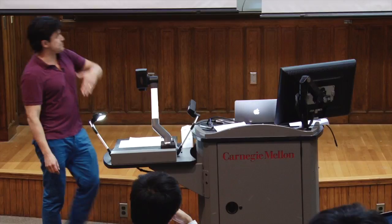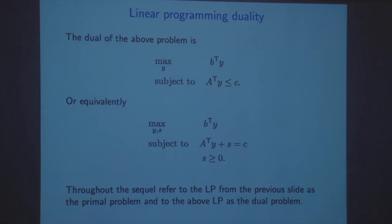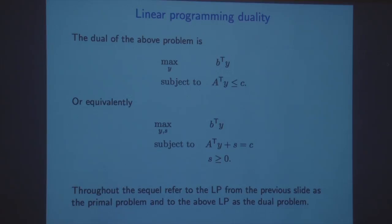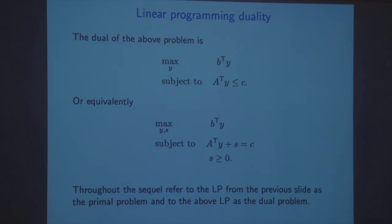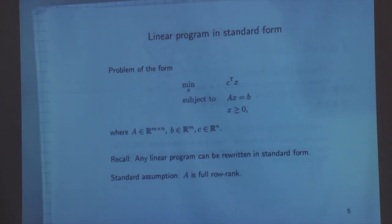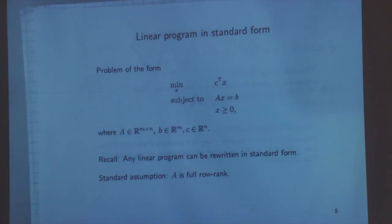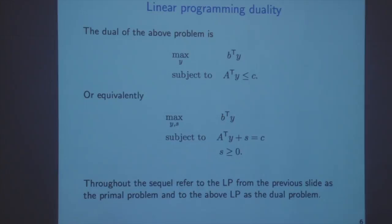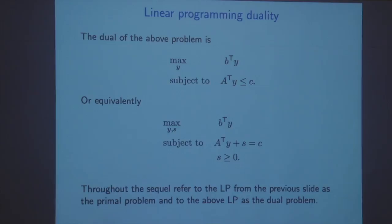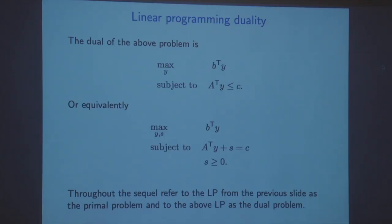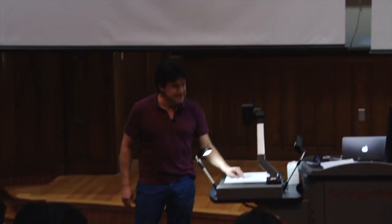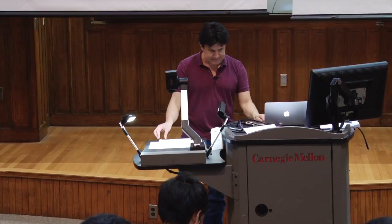Linear programming in standard form has a corresponding dual problem. The dual of this problem — you can go through the steps of constructing the Lagrangian — is another linear programming problem. What we had as constraints now defines the objective, and the vector that defines the objective in the primal problem defines the constraints in the dual problem. We can write the dual problem two ways: the first formulation doesn't include the slack variables, but for interior point methods it's useful to have the slack variables explicitly there. Throughout the rest of our discussion today, this problem here is the primal and that is the dual.